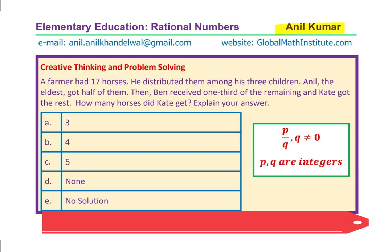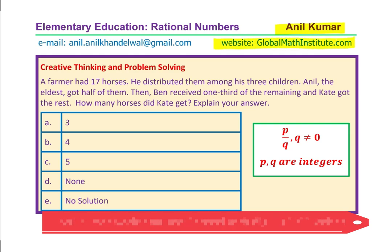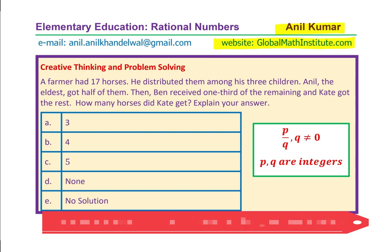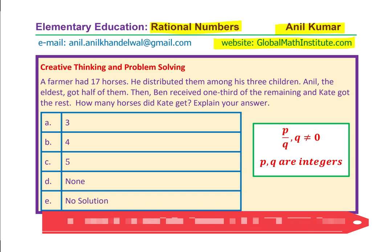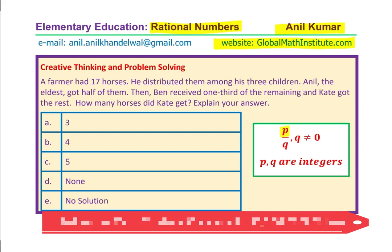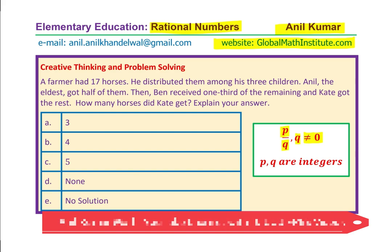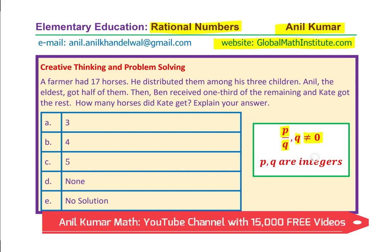I am Anil Kumar. Welcome to my YouTube channel and the website Global Math Institute. In this video, we have a challenge question for you. It is based on rational numbers. You know what rational numbers are — they can be written in the form P over Q, where Q is not equal to 0, since you cannot divide by 0, and P and Q are integers.